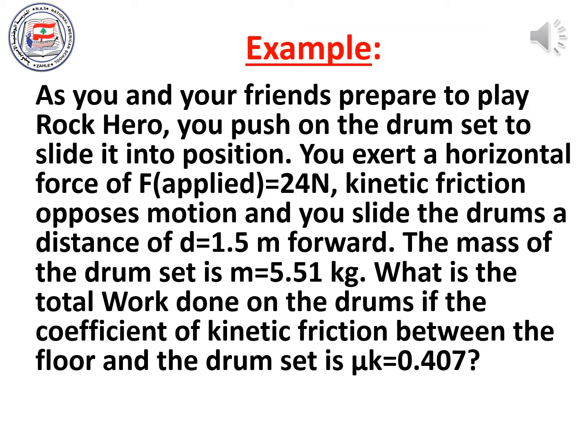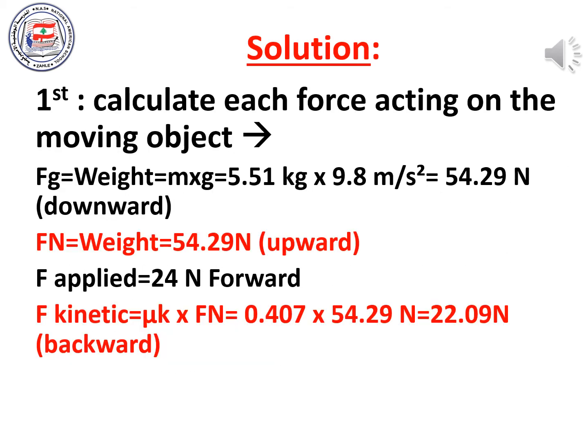For example, as you and your friends prepare to play rock hero, you push on the drum set to slide it into position. You exert a horizontal applied force of F = 24 newtons. Kinetic friction opposes motion and you slide the drums a distance of d = 1.5 meters forward. The mass of the drum set is m = 5.51 kilograms. What is the total work done on the drums if the coefficient of kinetic friction between the floor and the drum set is 0.407? I will show you the steps needed to find the total work when several forces act on an object.